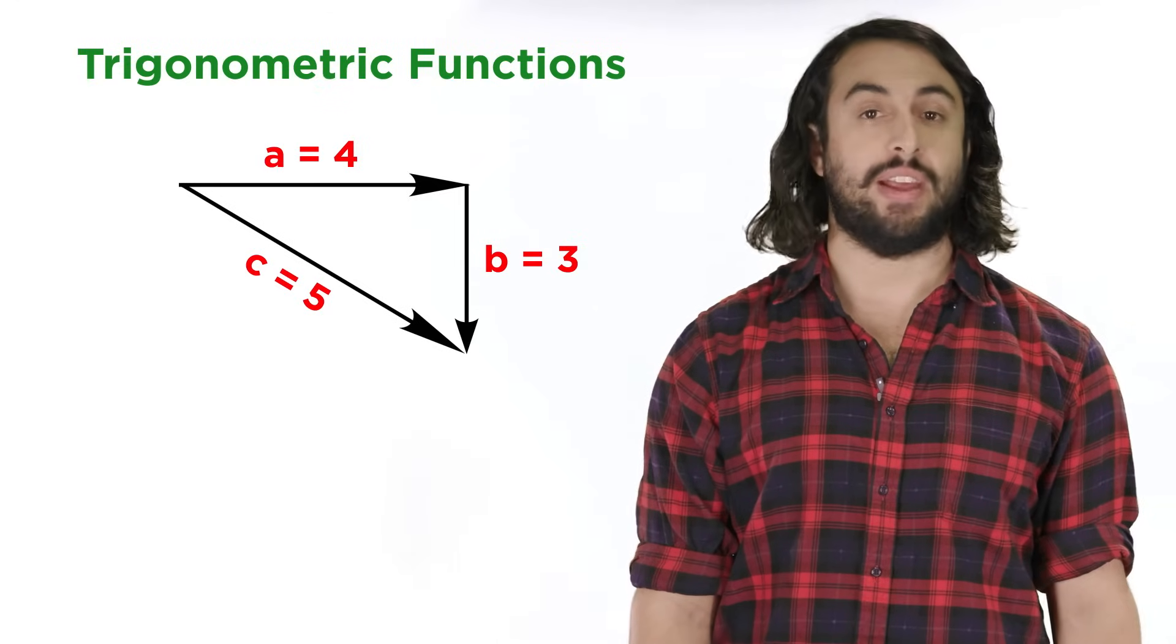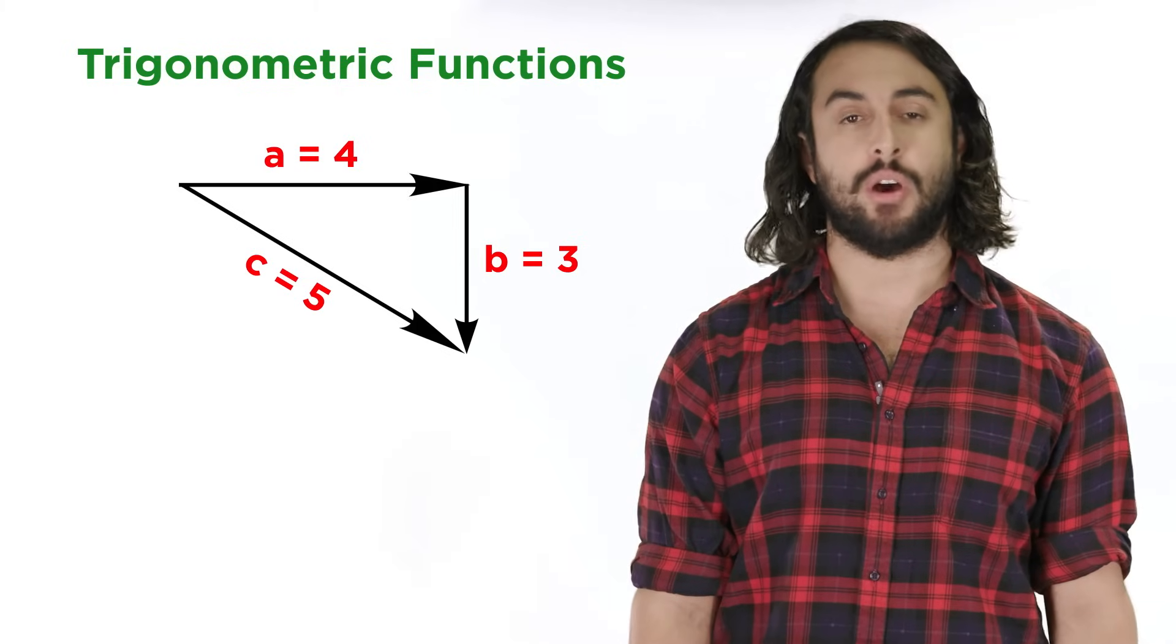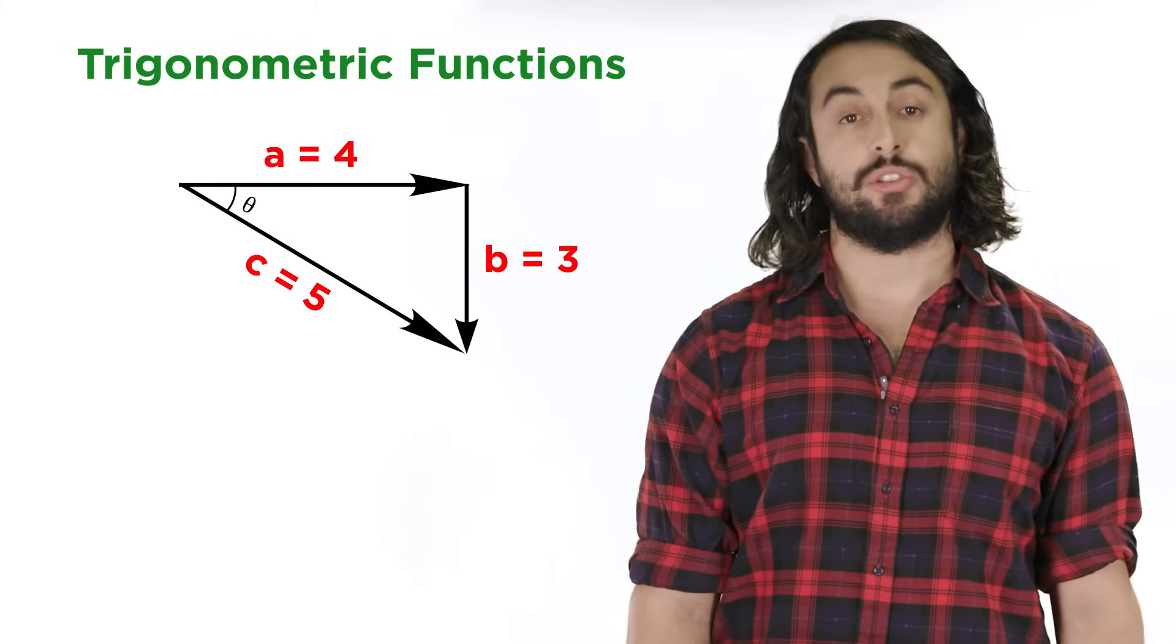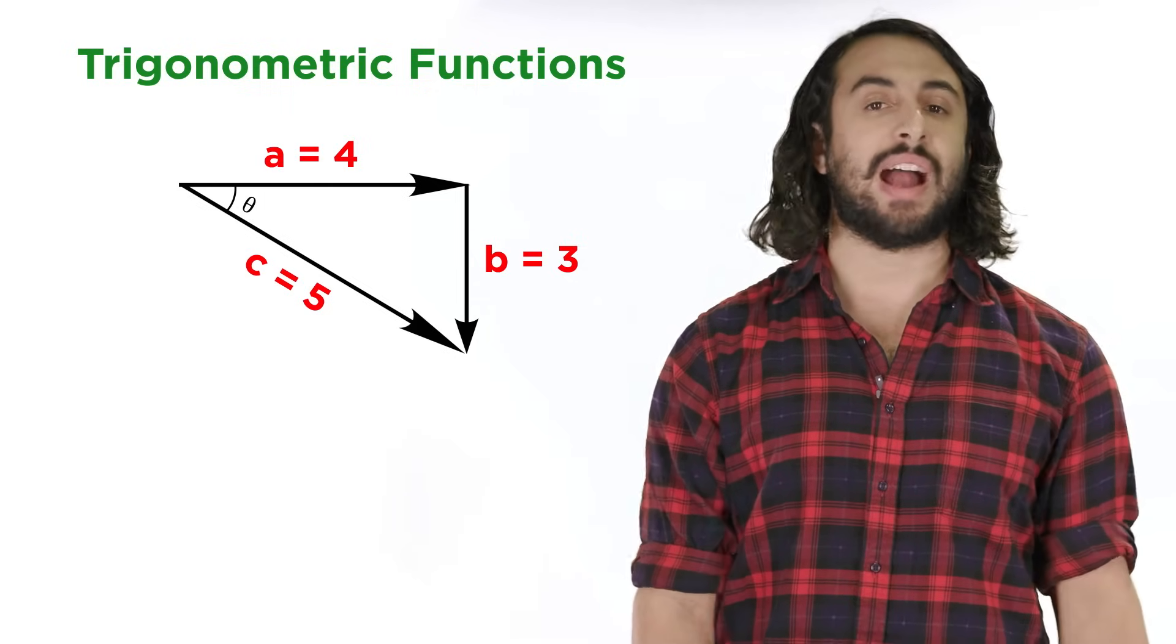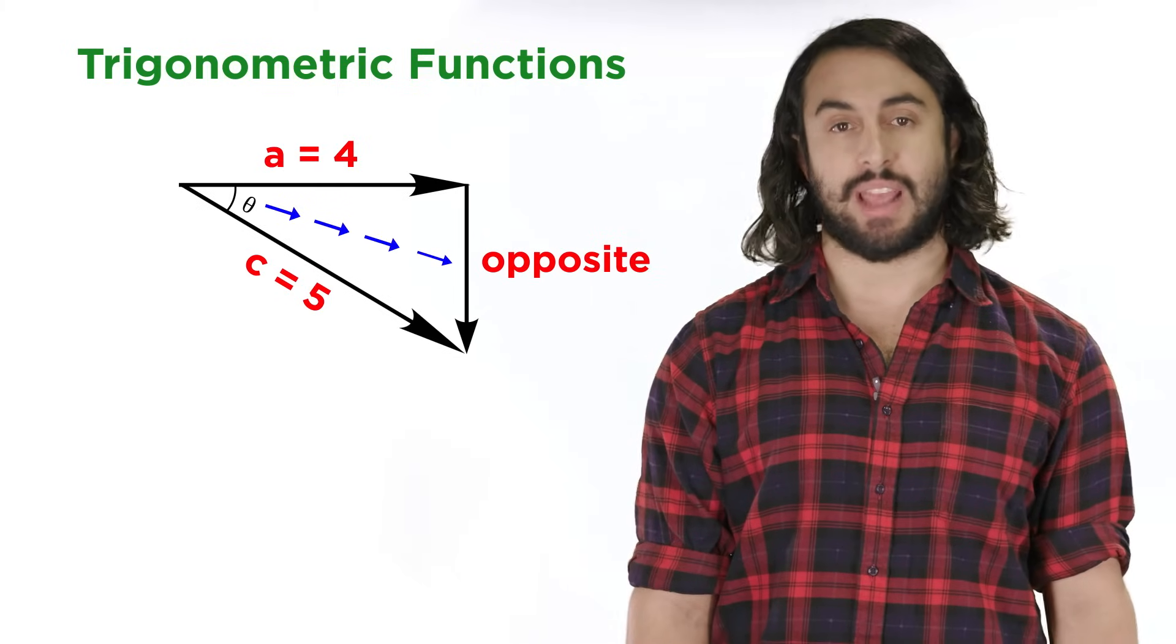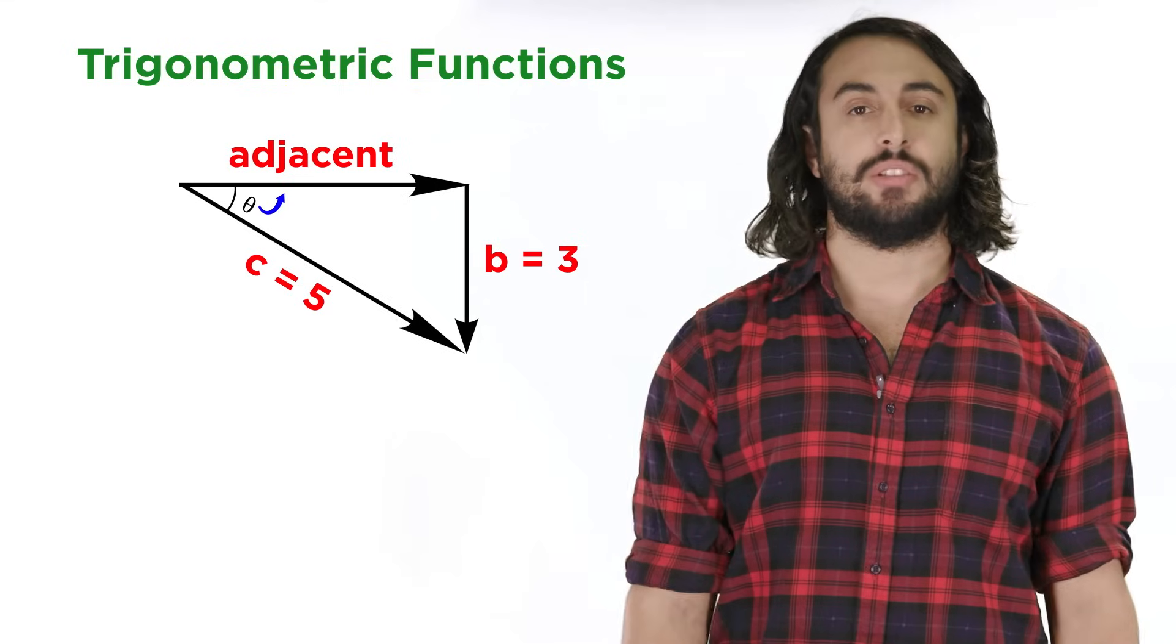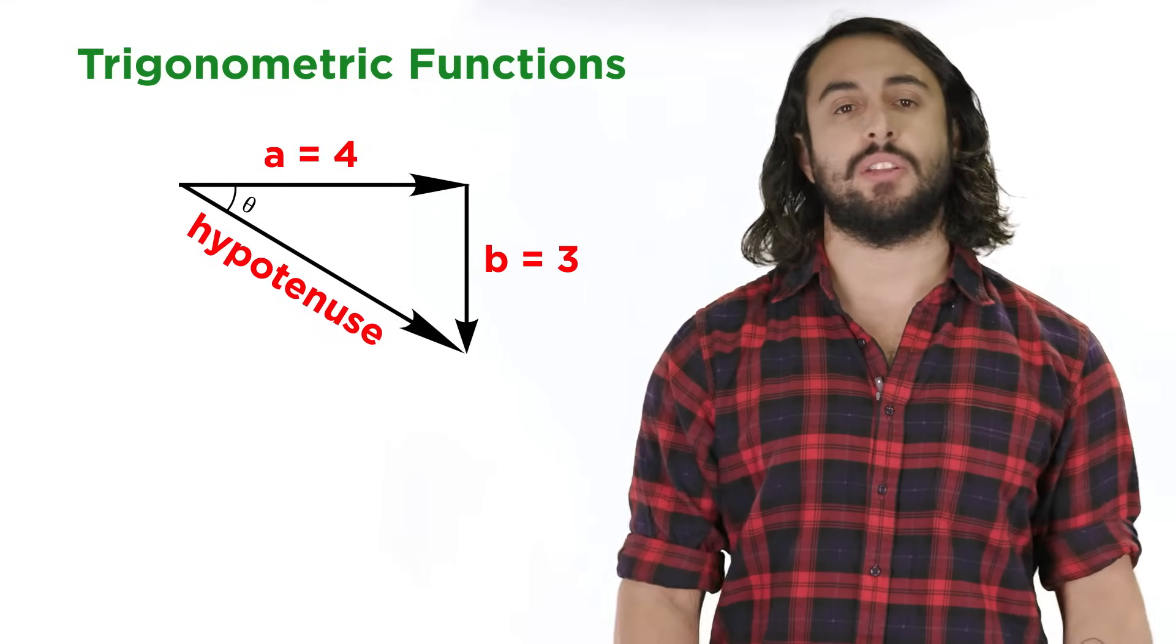When we are looking at right triangles, we can also use trigonometric functions to find the unknown angles. All we need to do is choose an angle, which we represent with the Greek letter theta, and label the sides of the triangle as opposite, the leg directly opposite the angle, adjacent, the leg right next to the angle, and the hypotenuse, which is always the longest side.